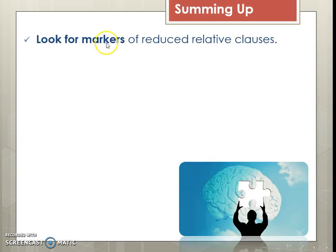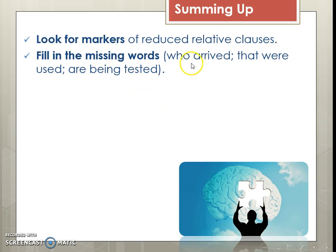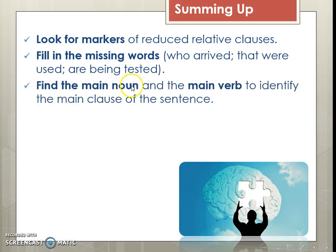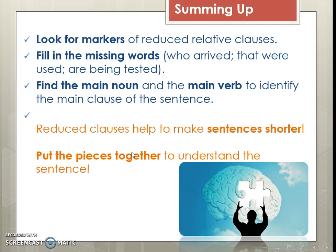So let's sum up. Look for the markers — sometimes those markers are when we don't have an 'is,' 'are,' 'was,' or 'were,' those auxiliary helping verbs. Fill in the missing words like 'who,' 'that,' 'are,' 'is,' and 'were.' Find the main noun and the main verb — find the main clause; that's the main point and the important part of the sentence. The reason we do this is because reduced clauses make sentences shorter, but sometimes shorter makes it a little harder to understand. If you stop and think and put it together, just like a jigsaw puzzle, you'll be able to understand the sentence.